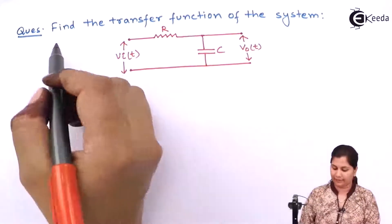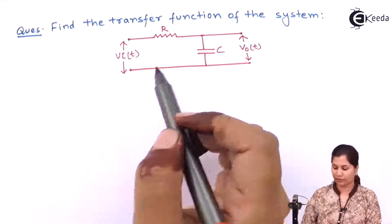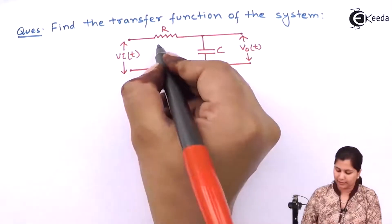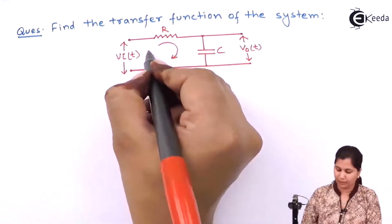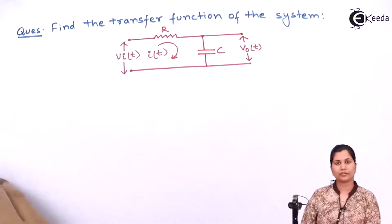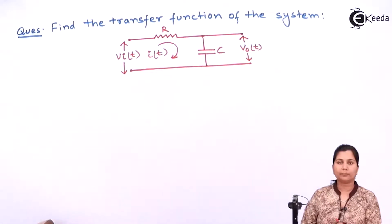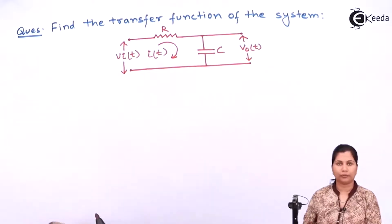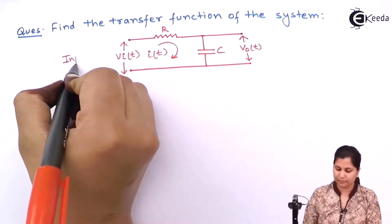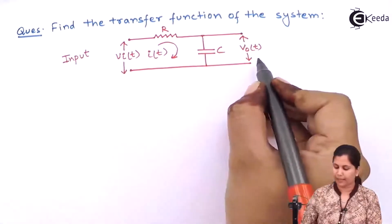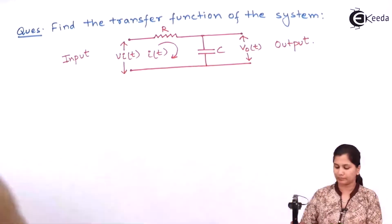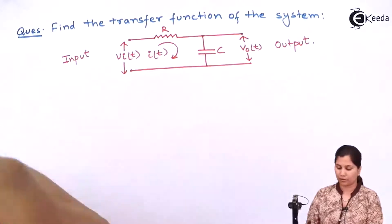This is the question and we have to find out the transfer function of the system. The circuit is given to us. This is the current flowing in the circuit, i.e., i(t). For finding the transfer function, first determine what is your input and what is your output. Here, Vi(t) is the input and Vo(t) is the output. So let's solve it.